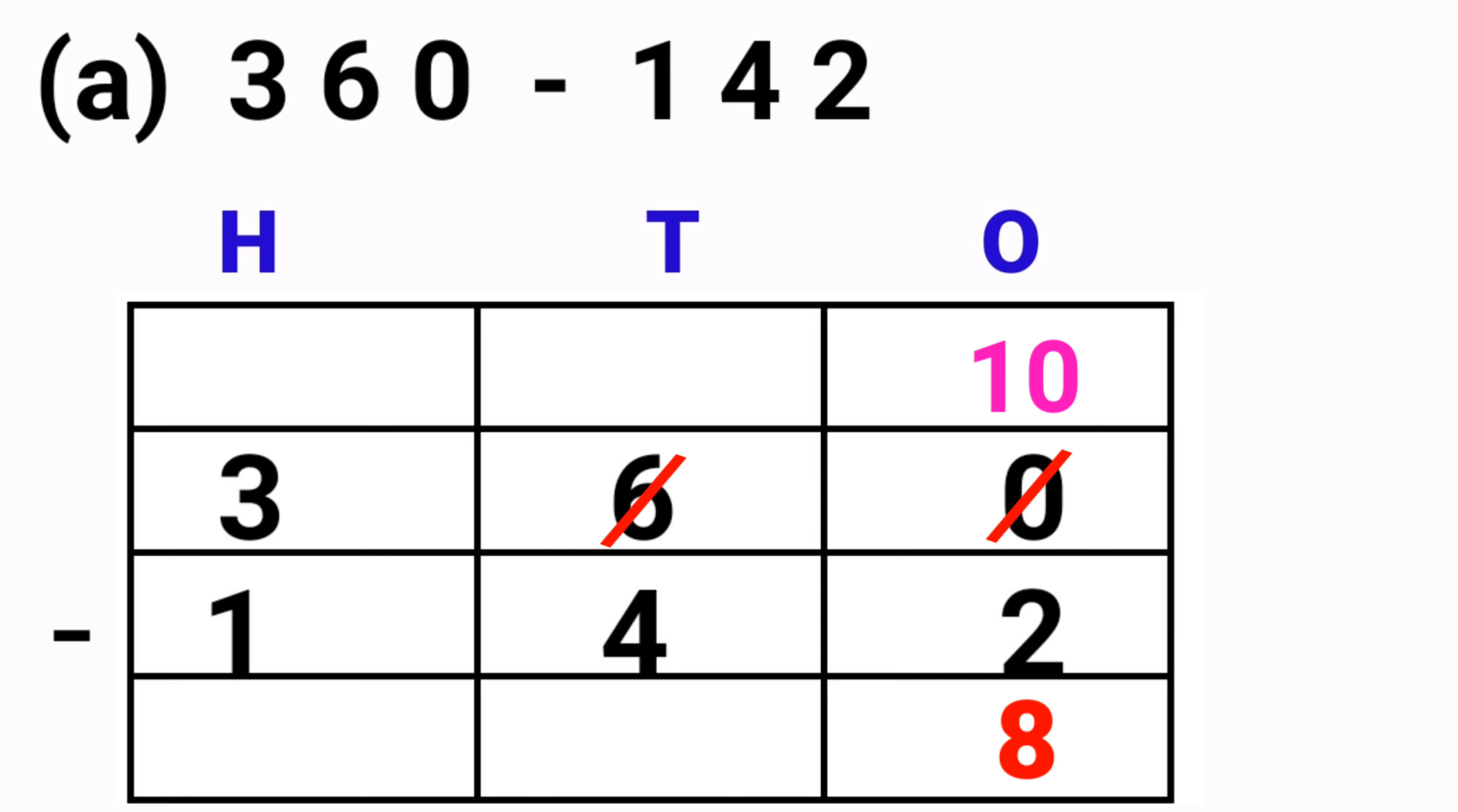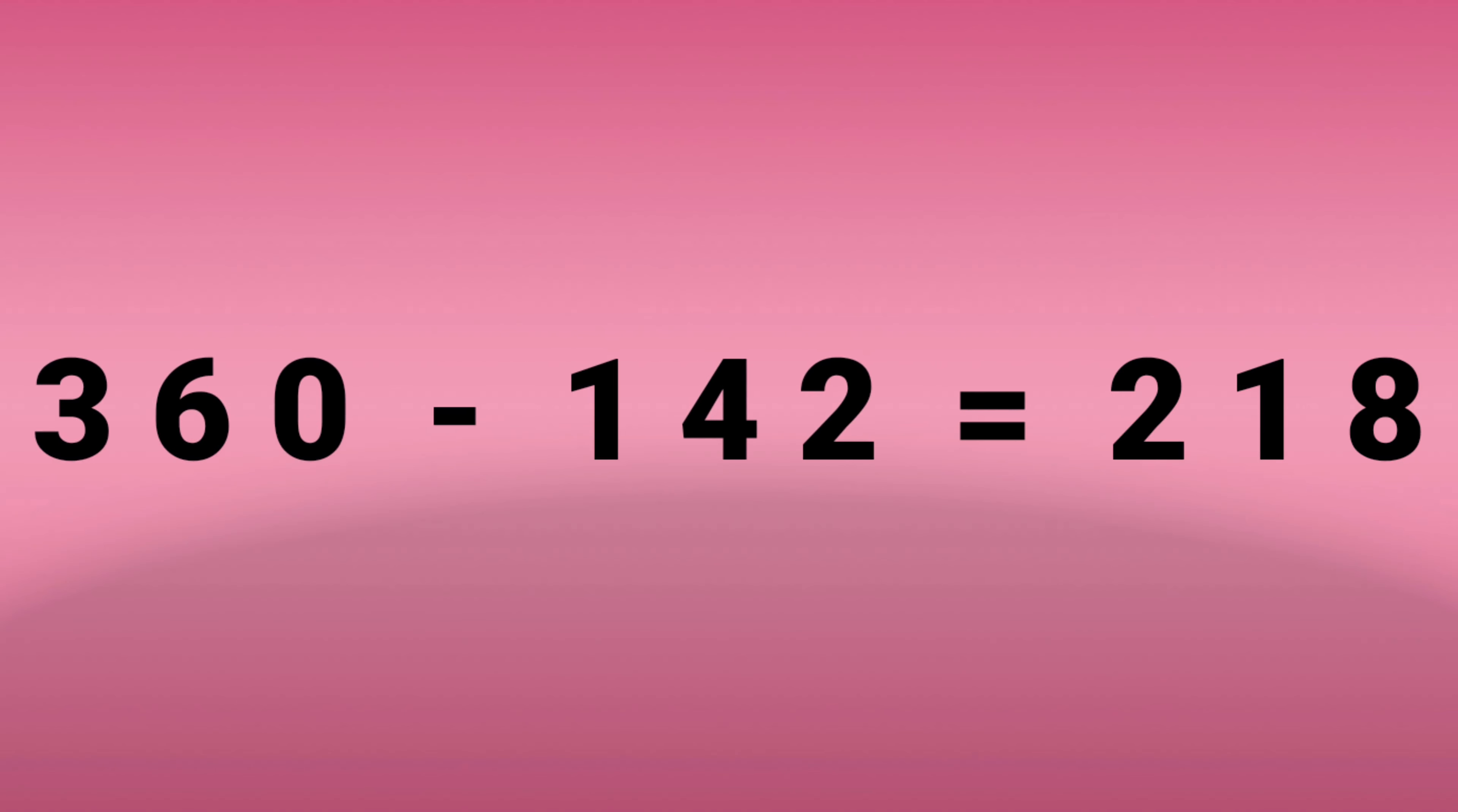Since we took 1 from 6, it will become 5. So 5 minus 4—4 after 5—the answer is 1. And the last one is hundreds place: 3 minus 1. So 1 after 2, 3. 3 minus 1 is equal to 2. See here, 360 minus 142 is equal to 218. Now we will see part B.